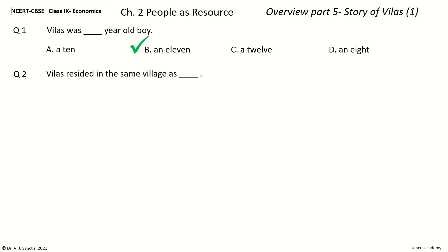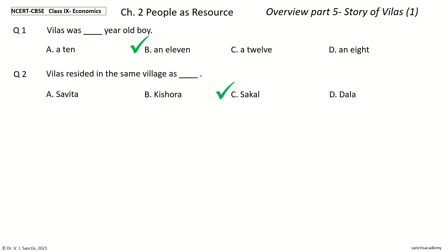Question 2: Vilas resided in the same village as dash. The options are: a) Savita, b) Kishora, c) Sakal, d) Dala. And the answer is Sakal. So Vilas resided in the same village as Sakal.